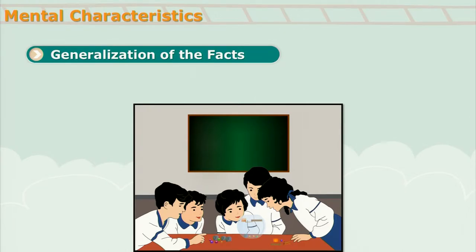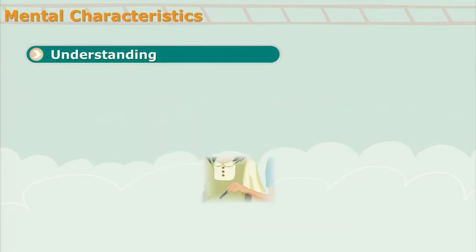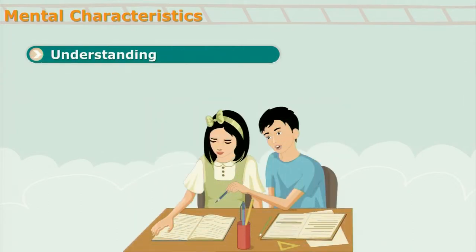First point is generalization of the facts. At this stage students start generalizing the facts, they start forming their opinion, they start experimenting on things, they start classifying — and that's how they generalize their facts. At this stage the understanding level of adolescents increases; their understanding is not limited to their own self, they try to understand others' opinions. So egocentrism wanes around this stage.